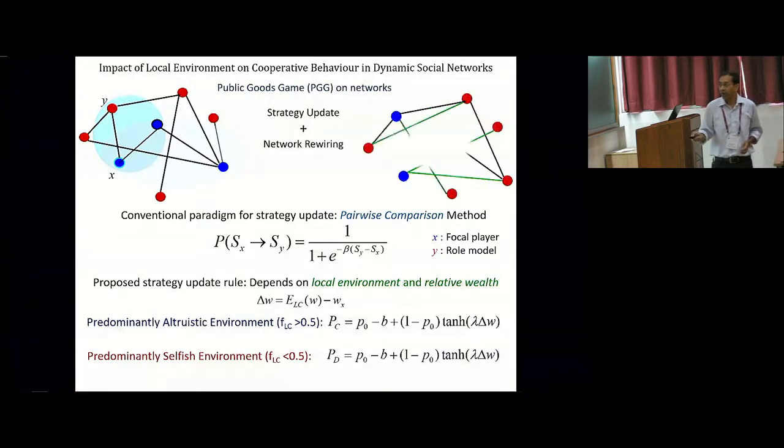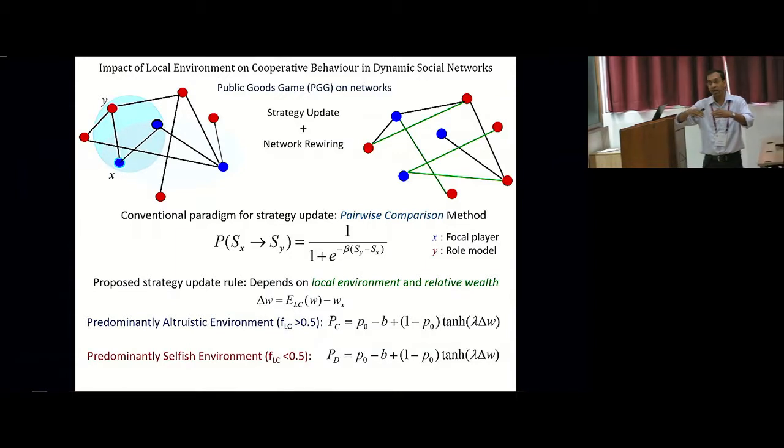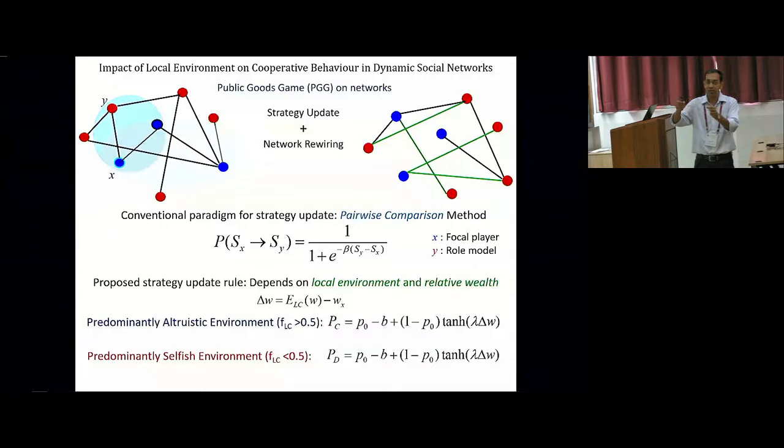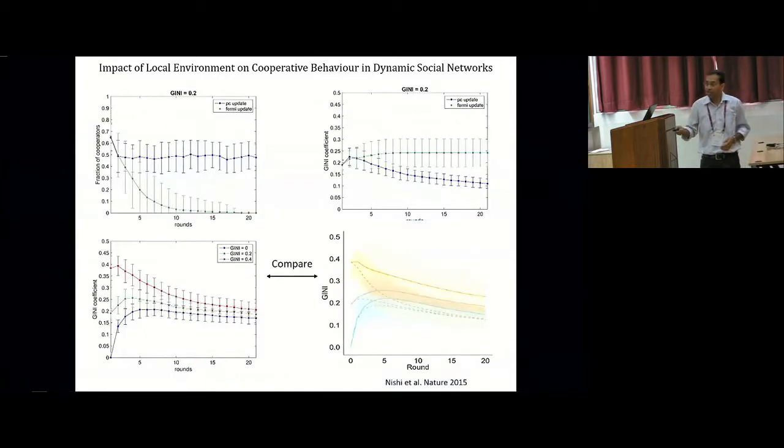We wanted to develop a model where this local environmental effect is taken into account, and in this we use the rule that the probability with which an individual cooperates depends not only on the local environment, the fraction of cooperators that are present in his local neighborhood, but also on the wealth difference between the focal player and the average wealth of the neighborhood. And so we find that, and this was a dynamic network, so there were two processes going on. One was strategy update, and the other was network rewiring. So two pairs of individuals were allowed to rewire the network, break connections and make new links in addition to updating their strategies.